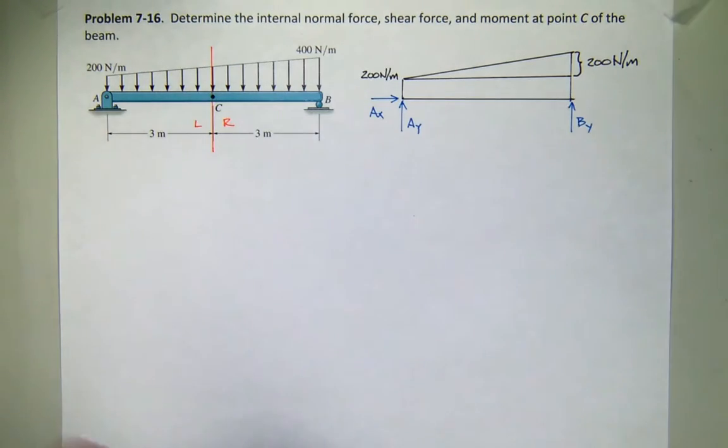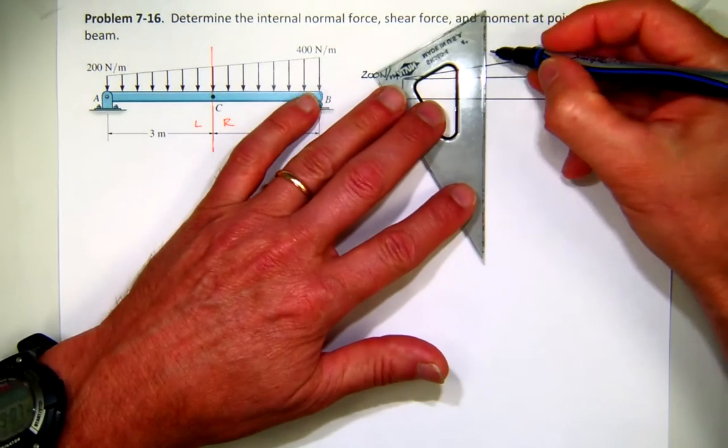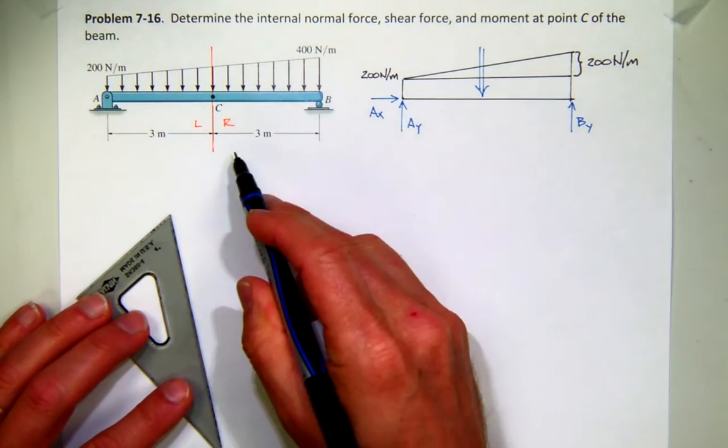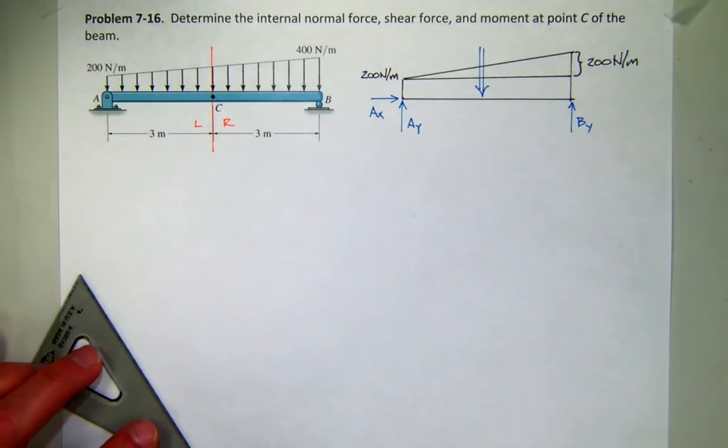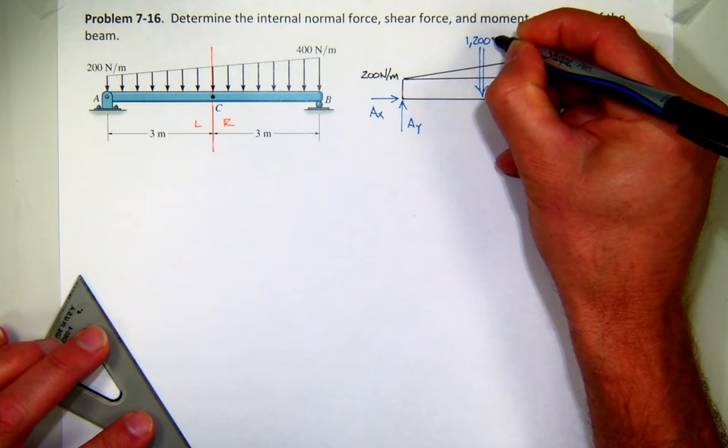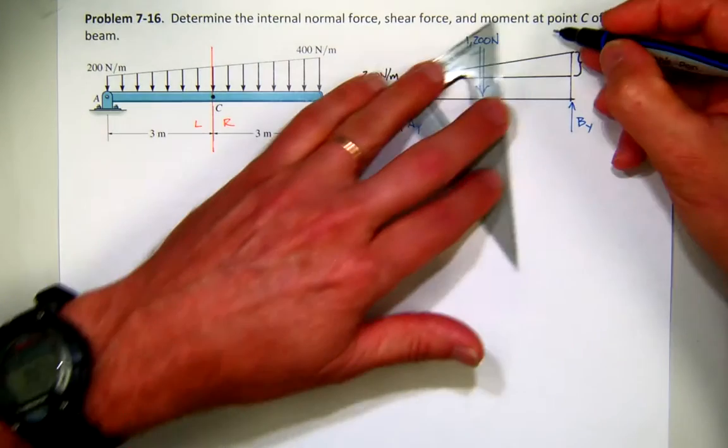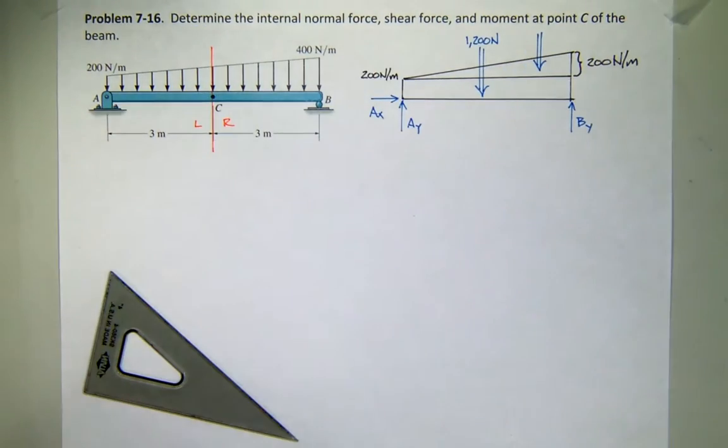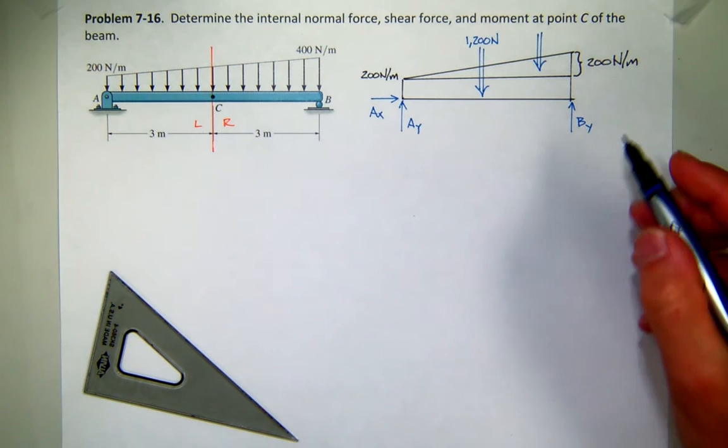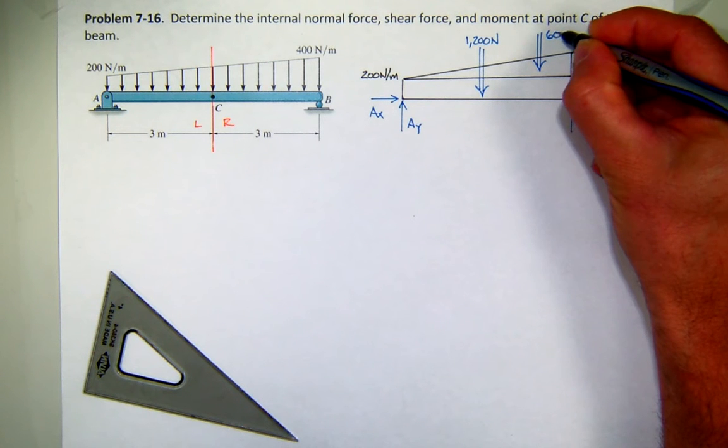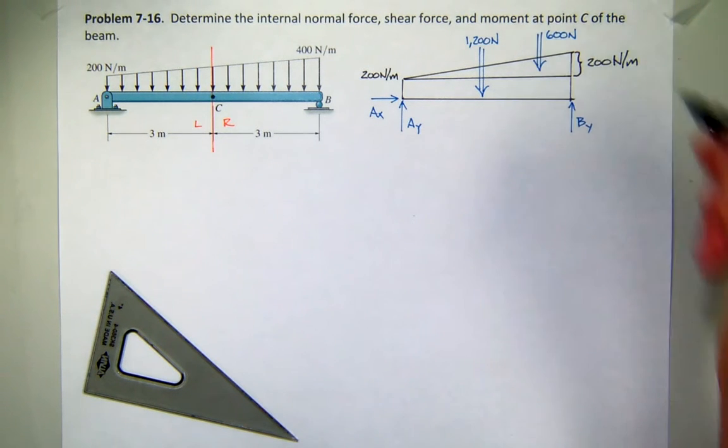So I'm going to have two forces. I'll have a force due to the rectangle, which is 200 times 6, so that's 1,200 newtons. And then I'll have another force due to the triangular piece, which is one-half base times height, so that should be 600.